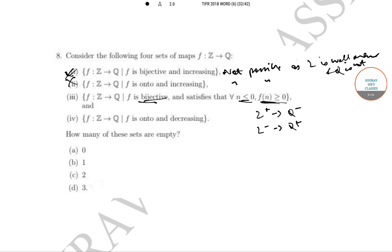Statement 4 is not possible since Q is not well-ordered. So we have three empty sets: sets 1, 2, and 4. The correct answer is option D.